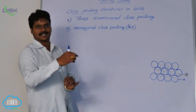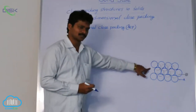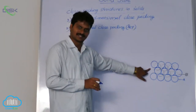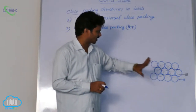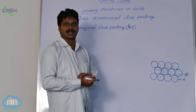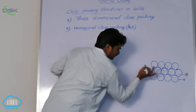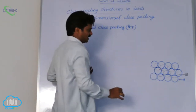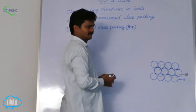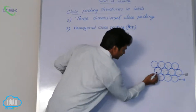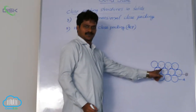Depressions means deeps. When we place the second layer of spheres in the depressions of the first layer, all triangular voids are not occupied. These are the triangular voids of the first layer. There is also another triangular void, but this void is not occupied.